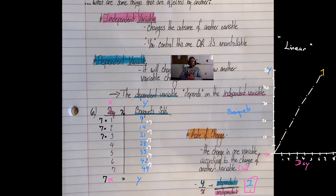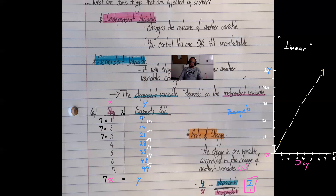That's pretty much it—that's how these relationships work. One variable is independent and affects another, and that other variable is dependent on it, in the same way your grade is affected by how well you study. In this case, the bouquet sales were influenced directly by the time passing—how long she was selling them. I hope you found this helpful, and I will see you next time.